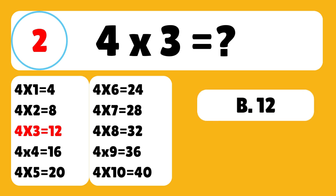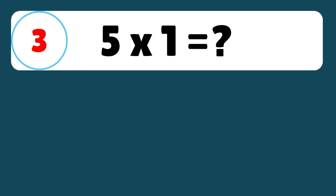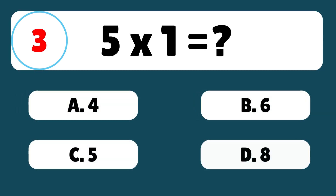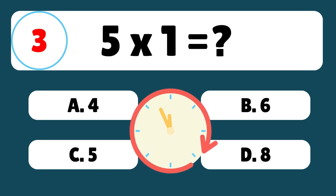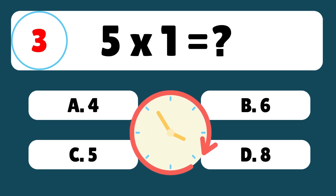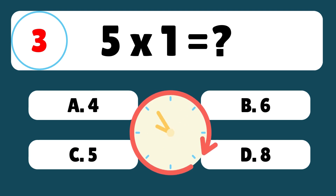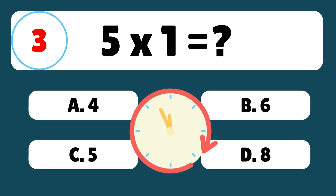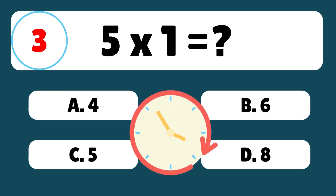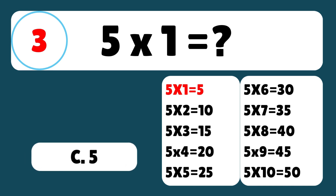Question 3. What is 5 times 1? The answer is C. 5 times 1 is equal to 5.